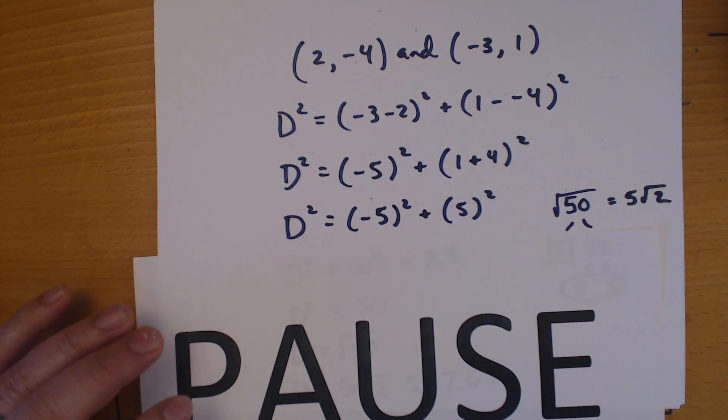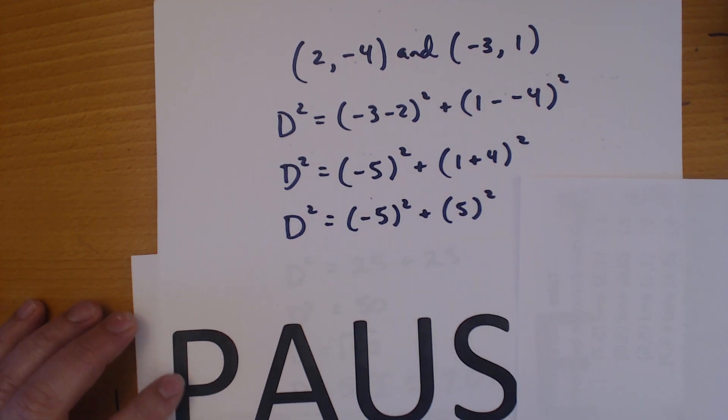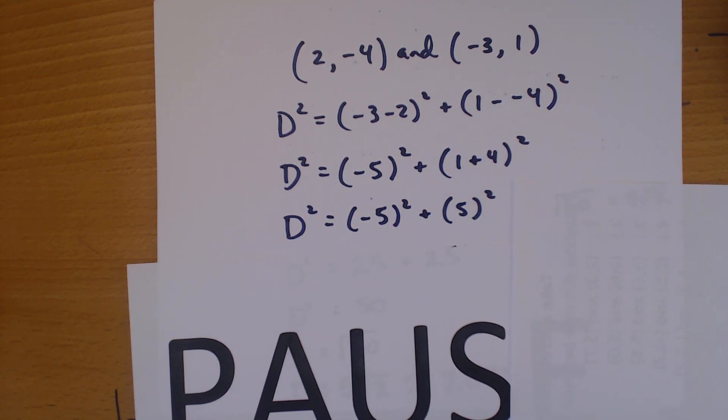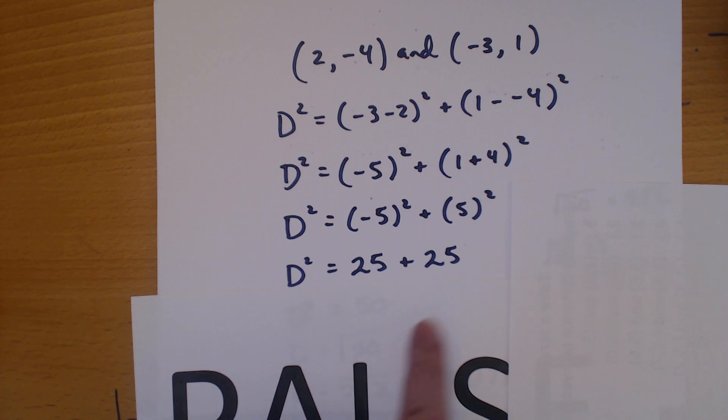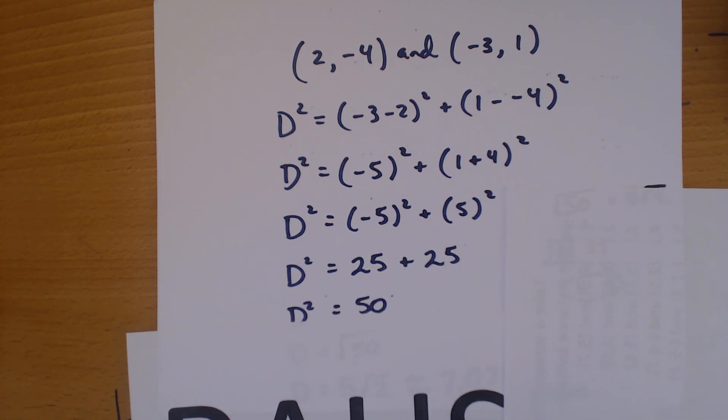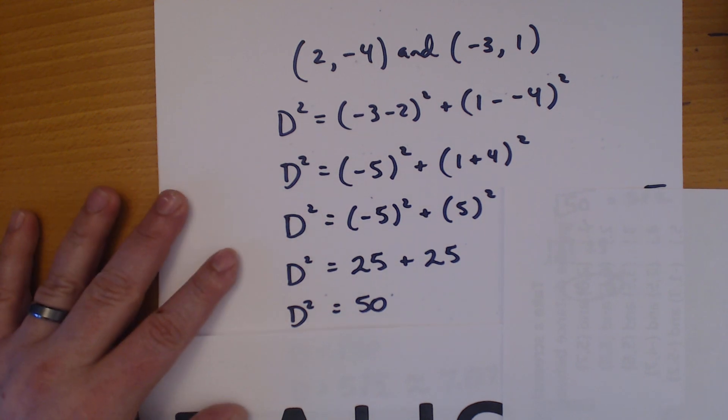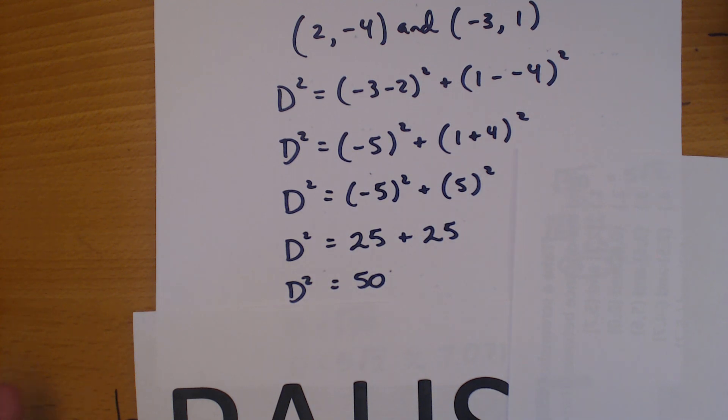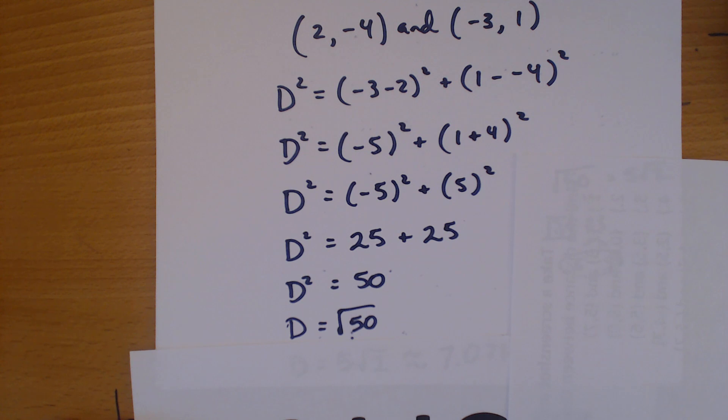Now, negative 5 squared. That's negative 5 times negative 5, which is 25. And 5 times 5 is 25. Add them together, you get 50. And now, remember, what we have to do is we need to leave, we can't leave it as D squared. We need it as just D. So, we square root it.